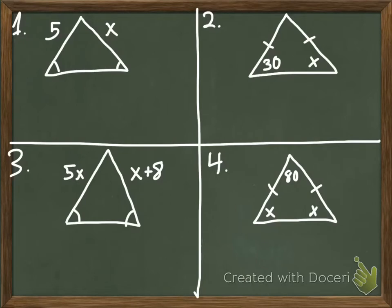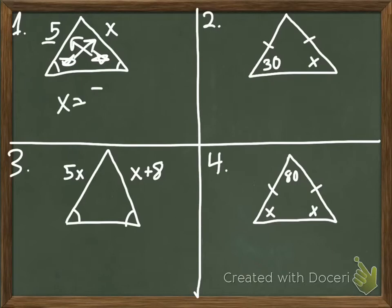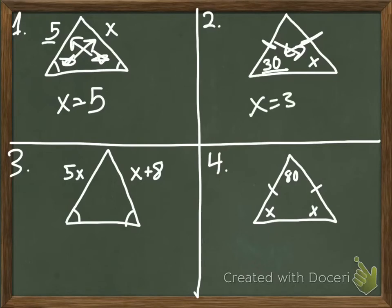I'm going to start with number one. I see that this angle and this angle are congruent, which, since I know the converse of the Base Angles Theorem, tells me that the opposite sides are congruent. So if this is 5, that means X also has to be 5. For number two, we're going to use the Base Angles Theorem. We see that our two sides are congruent, so we know the angles opposite them are congruent. If this is 30°, that means X also has to be 30°.